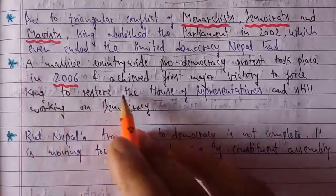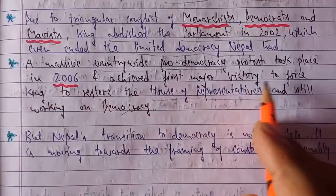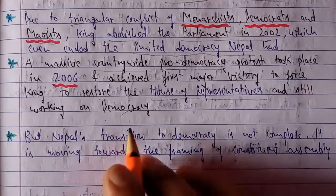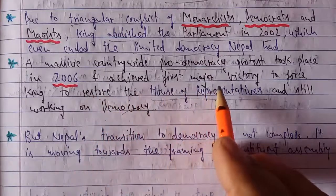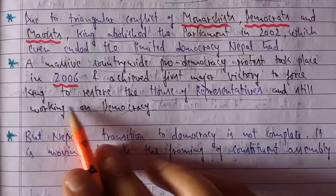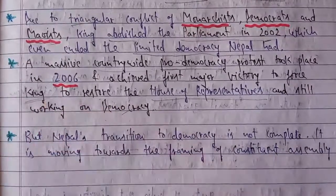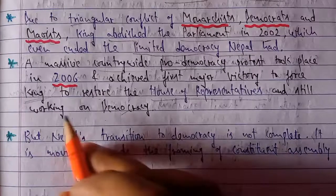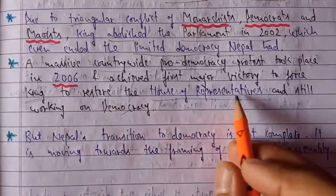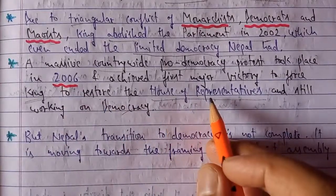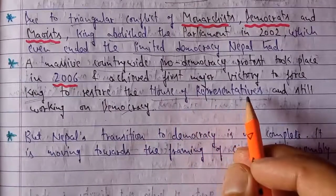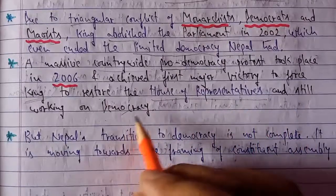The countrywide pro-democracy protest took place in 2006 and achieved the first major victory, forcing the king. Previously it was limited autonomy, but now this was a true autonomy. Due to massive demonstrations across the country, the king was forced to restore the House of Representatives — the parliament of Nepal. He re-established the House of Representatives and they were still working on democracy.